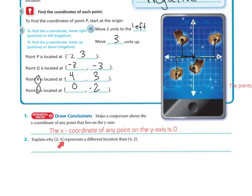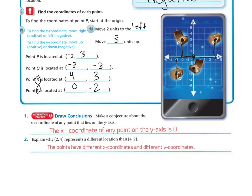Explain why (2, 4) represents a different location than (4, 2). The points have different x-coordinates and different y-coordinates. Two and four goes over two and up four, but four and two goes over four and up two — so you get two very different locations on your coordinate plane.